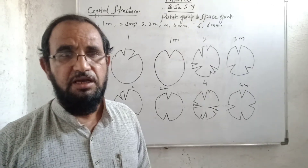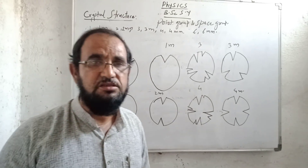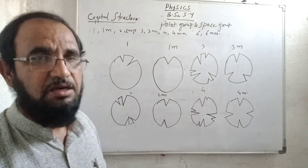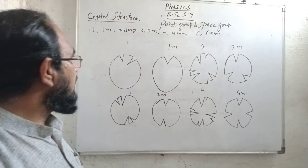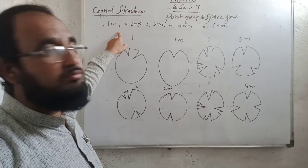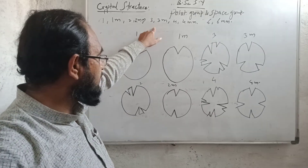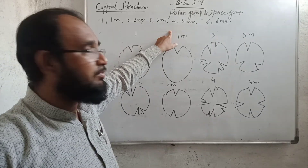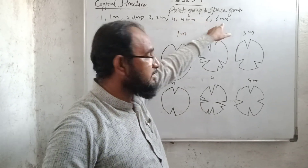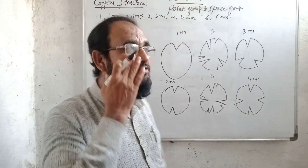We can study the symmetry operations with the help of different examples. The allowed stages are: 1, 1M, 2, 2MM, 3, 3MM, 4, 4MM, 6 and 6MM. Let us see them one by one.